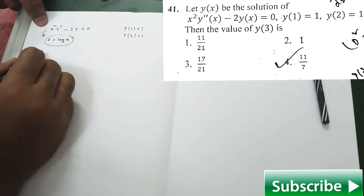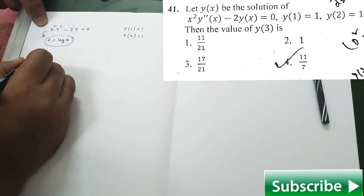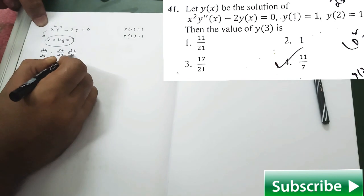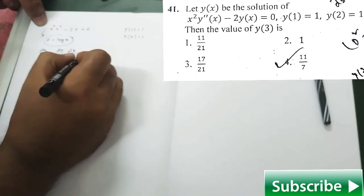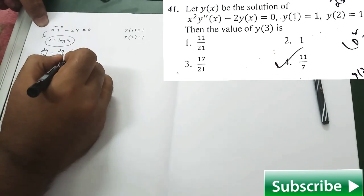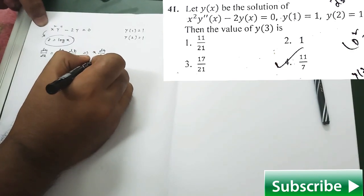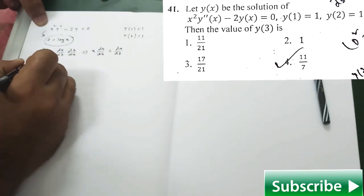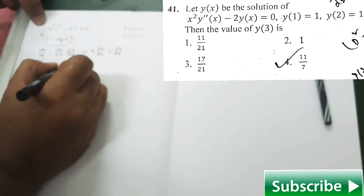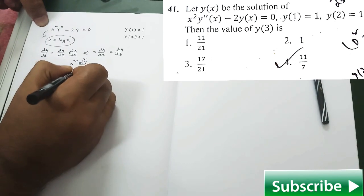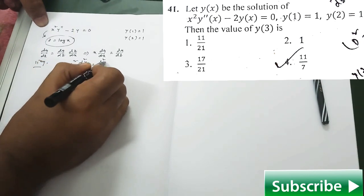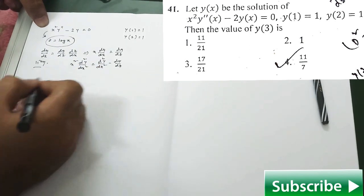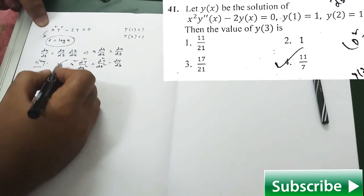For that purpose, we simply substitute z equal to log(x). After that, dy/dx turns out to be dy/dz, and that will imply dz/dx is 1/x. So you have this kind of relationship in hand. Similarly, you will have x² · d²y/dx² expressed in terms of the new variable z.